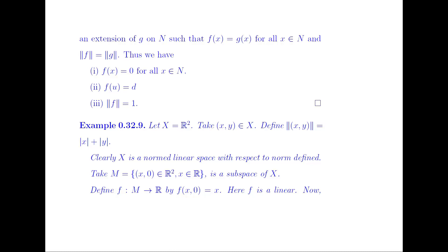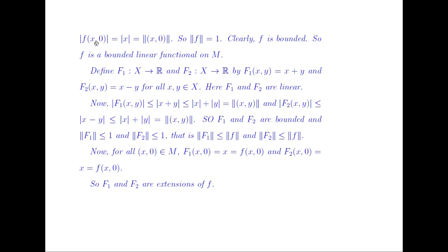Now consider the following example. Let X = ℝ², with norm defined as ‖(x, y)‖ = |x| + |y|. One can verify that this is a normed linear space. Take M = {(x, 0) : x ∈ ℝ}, which is a subspace of X. Define F: M → ℝ by F(x, 0) = x. One can easily prove F is linear, and |F(x, 0)| = |x| = ‖(x, 0)‖, so norm(F) = 1. Hence F is a bounded linear functional on M.